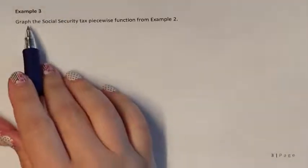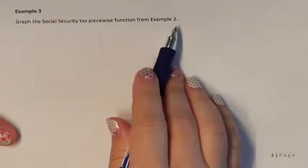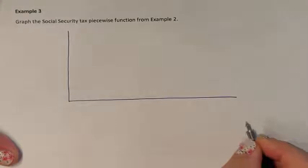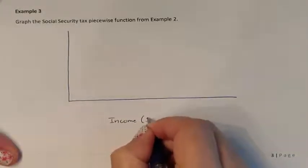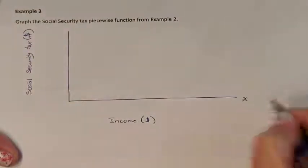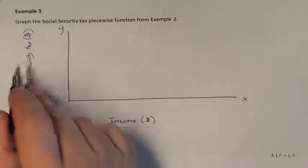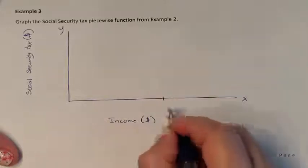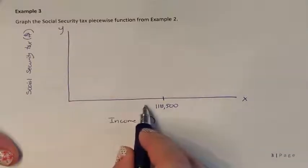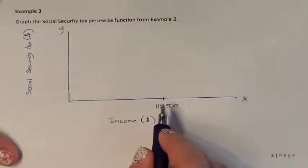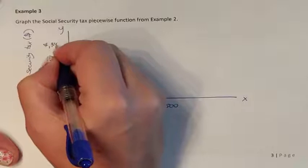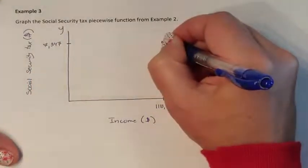Example 3: Graph the Social Security tax piecewise function from Example 2. Income is on the x-axis and Social Security tax is on the y-axis, since you need to know your income to determine your Social Security. There is one key coordinate point: if you made exactly $118,500, you pay exactly $7,347 in Social Security taxes.